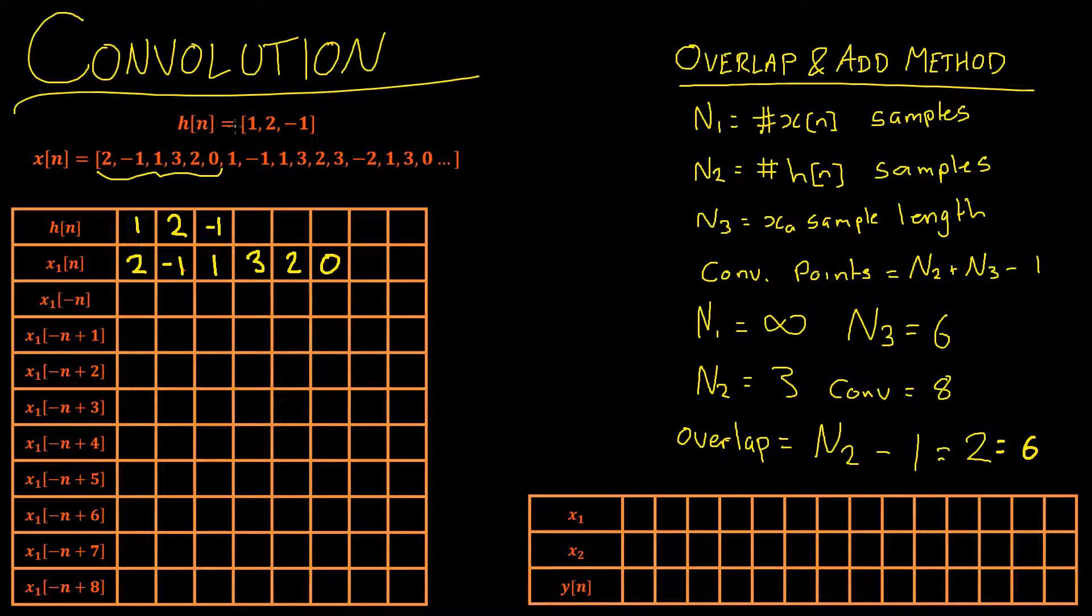Now if you imagine convolution as taking our h of n and sliding it across our x of n and then multiplying and adding them all as we're going to do here, you can hopefully see that the end of this x of n sample would overlap with the start of this next x of n sample. So because of that when we're doing our overlap and add method we have to calculate the amount of overlap between our two signals. That's always given by N2 minus 1 which is simply 3 minus 1 which is 2.